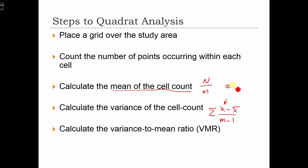Number of points in quadrat I. And X bar is this over here. It's the mean cell count. So it's the mean number of points, the average number of points per quadrat. And M is the number of quadrats.